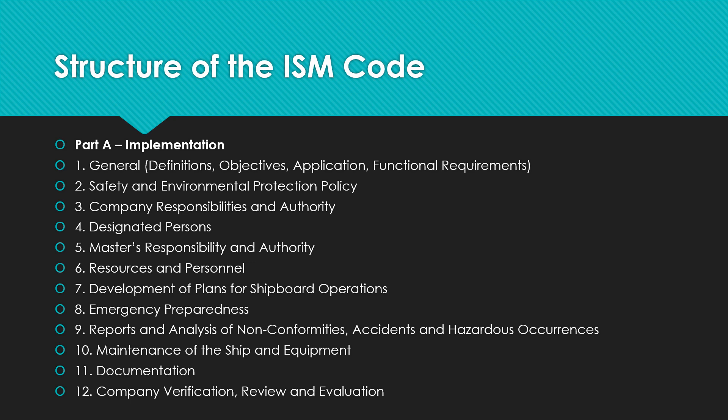Part 10 talks about maintenance of the ship and equipment. The company needs to establish procedures to ensure that the ship is maintained in conformity with the provisions of the relevant rules and regulations. Part 11 talks about documentation — the company should ensure that valid documents are available at all relevant locations, changes to documents are reviewed and approved by authorized personnel, and obsolete documents are promptly removed. Many companies require masters, chief engineers, and senior officers to review the SMS and provide feedback for revisions.